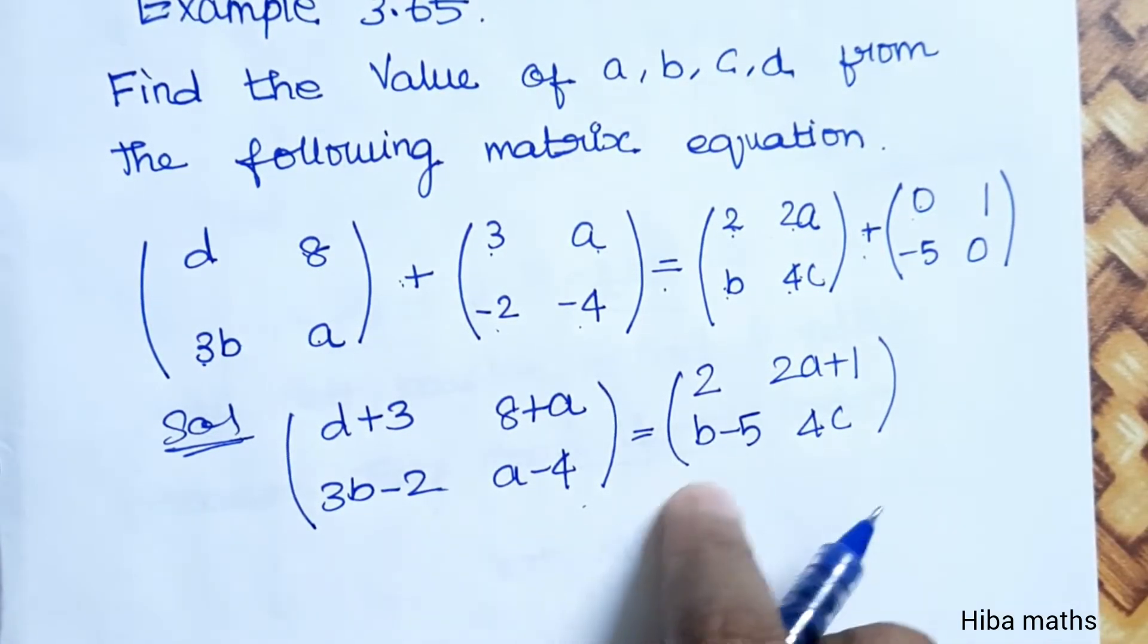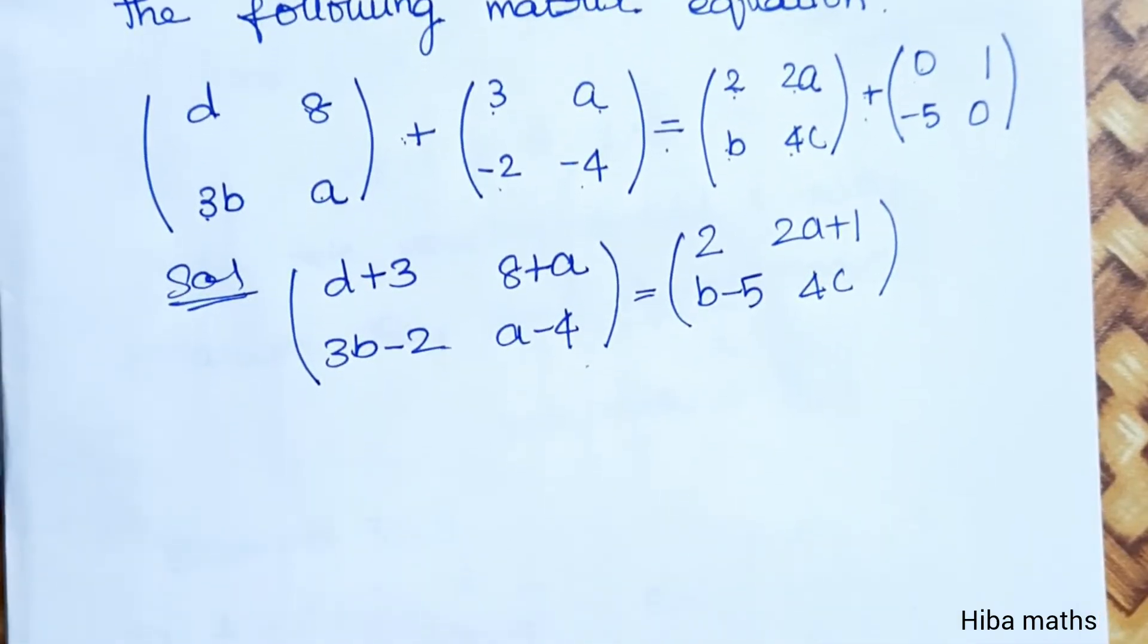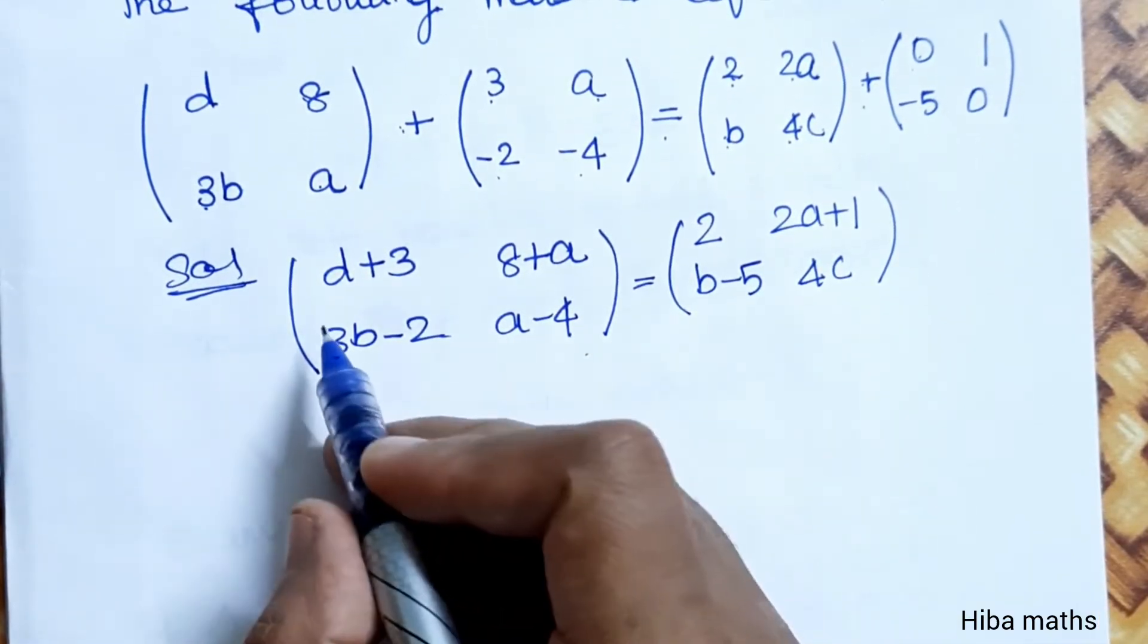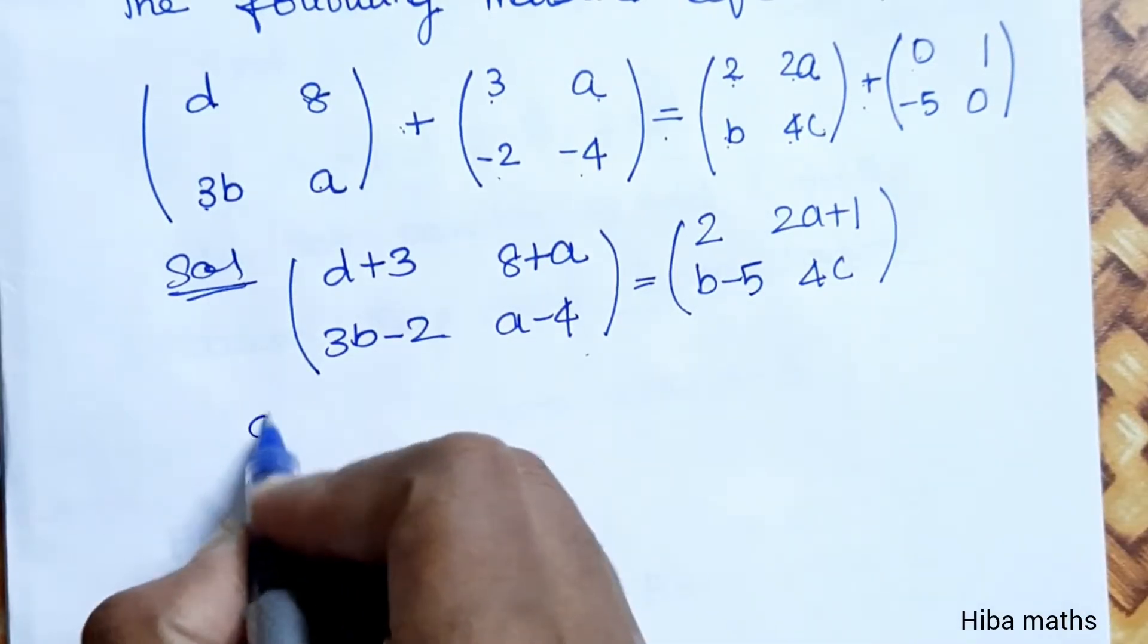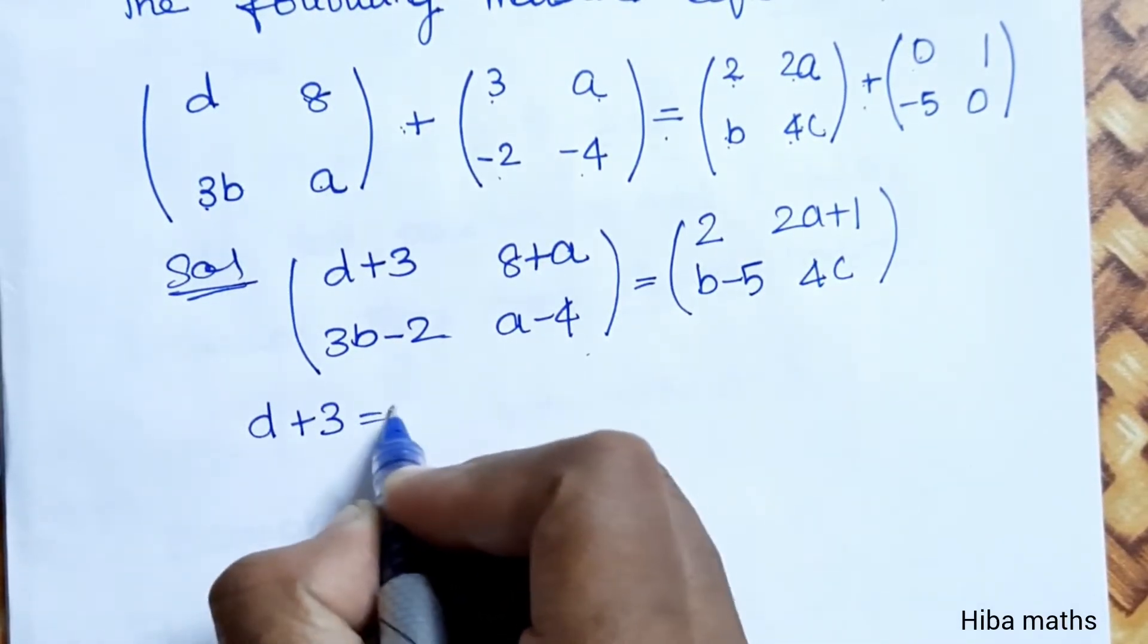Now, this matrix is equal. First row, first column equal to first row, first column. D plus 3 is equal to 2.